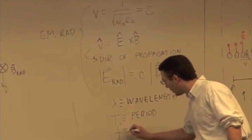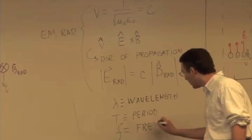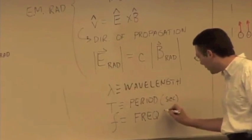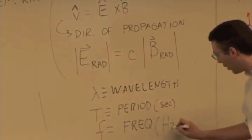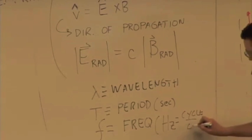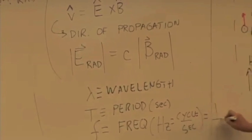Little f is a frequency. That's the number of cycles per second, or waves per second. This is in seconds. Frequency is in, well, hertz, which is a cycle per second. And that's one over the period.